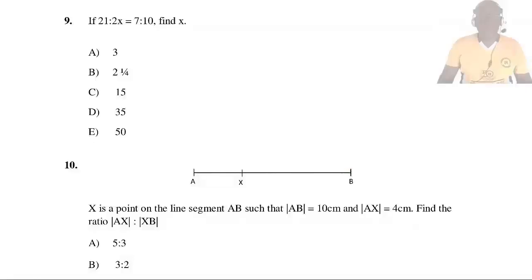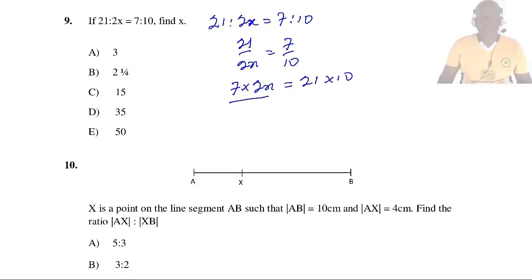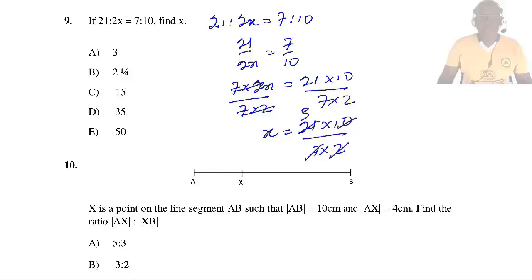Question 9: If 21 is to 2s equals 7 is to 10, find s. This gives 21/(2s) = 7/10. Cross-multiplying: 7 × 2s = 21 × 10, so 14s = 210. Dividing: s = 210 ÷ 14. 7 goes into 21 three times, 2 goes into 10 five times, so 3 × 5 = 15. So the answer is C.